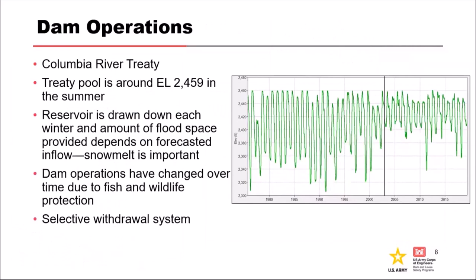Some dam operations - it's a really interesting project. Operations are really complex, which I tell everybody who listens to me about this project. Everything about this project is complicated, including the operations. This here is the history of the pool data. They switched operations in the early 2000s, which played into how we build our loading. We do stage duration for this - how long is the pool at a certain level at any given time of year, more than the stage-frequency curve. They changed some operations to address fish and wildlife concerns, and they have a selective withdrawal system where they can choose the temperature of water based on pool depth for different times of the year.